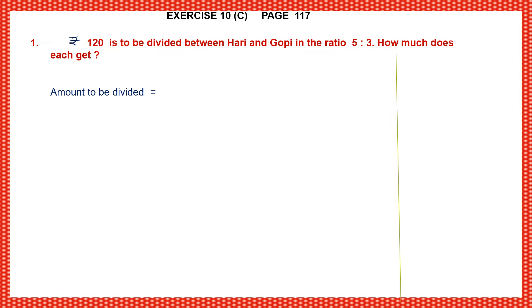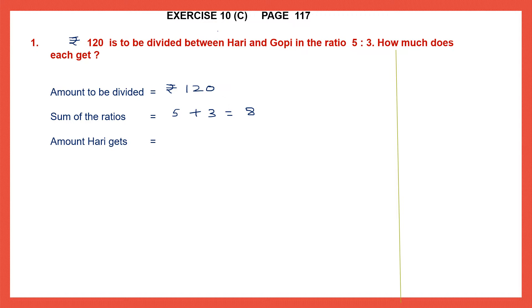The amount to be divided is 120 rupees. The sum of the ratios — let's take the ratio 5 is to 3 and find the sum. We add up 5 plus 3 and the sum is 8. Now we need to find how much Hari gets. Take the first term of the ratio which is 5, divide it by the sum of the ratios which is 8, and multiply it by the amount which is 120.